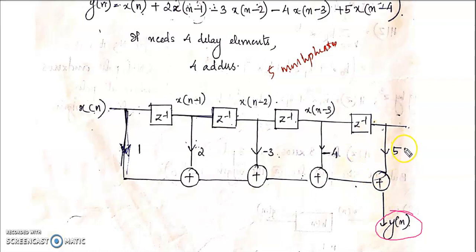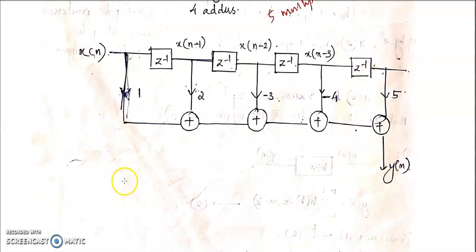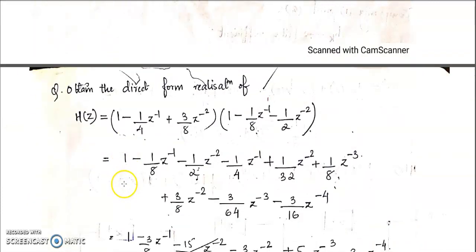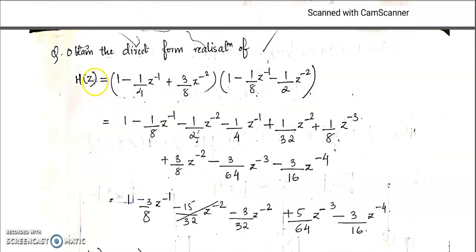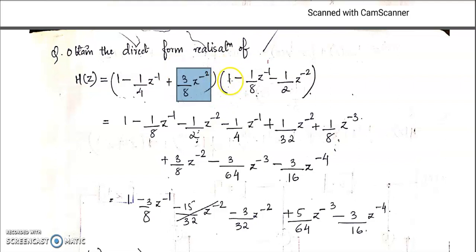This is the direct form structure of the FIR filter. We can check one more problem. Here, H(Z) is given as (1 − (1/4)Z⁻¹ + (3/8)Z⁻²) · (1 − (1/8)Z⁻¹ − (1/2)Z⁻²).